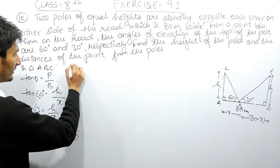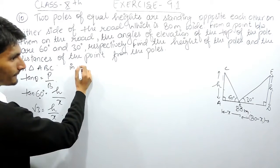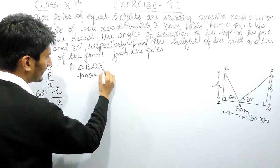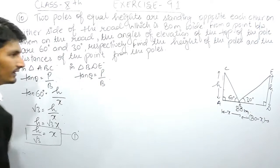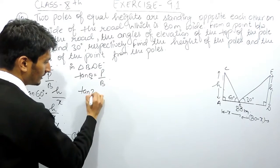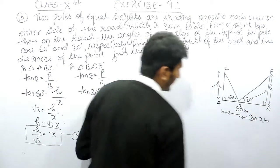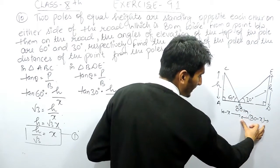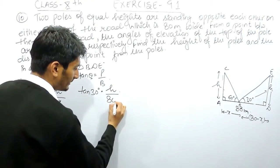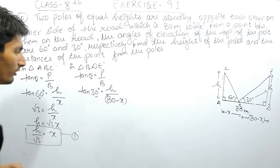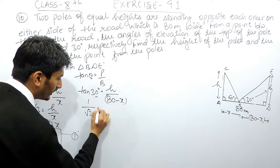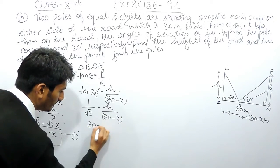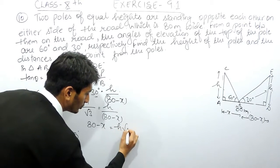Similarly, in the second triangle BDE, I again use tan θ equals perpendicular upon base. Here the angle is 30 degrees. The perpendicular is H and the base for this triangle is 80 minus X meters. The value of tan 30° is 1 upon root 3, which equals H upon 80 minus X. Cross-multiplying gives 80 minus X equals H root 3.